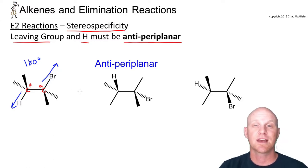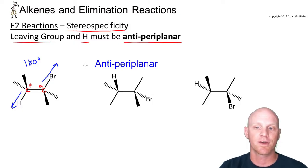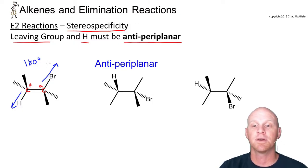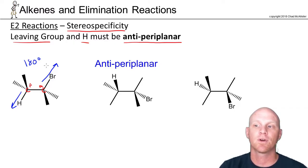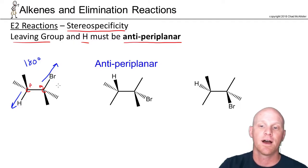Anti-coplanar means they're in the same plane but point in opposite directions. Antiperiplanar, on the other hand, says that it doesn't have to be exactly 180 degrees, but it does have to be close. There's just a little bit of leeway in E2 reactions, so antiperiplanar is a better term than anti-coplanar.